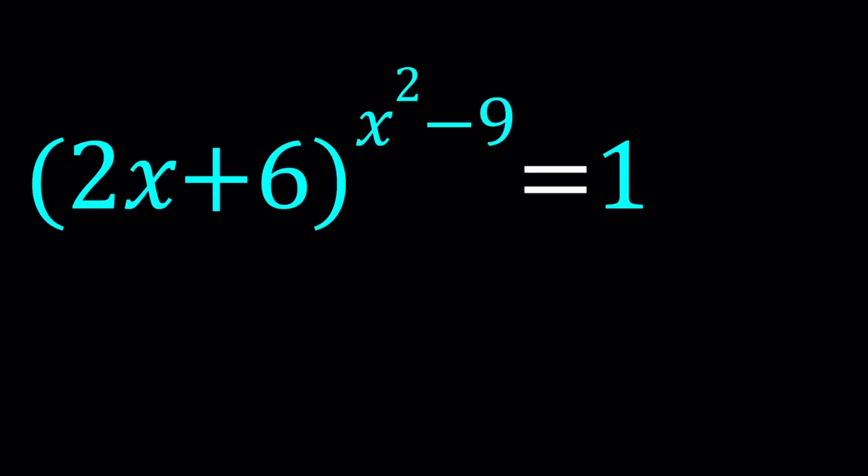Hello everyone. In this video we're going to be solving an exponential equation. We have 2x plus 6 at the base and the exponent is x squared minus 9. So we have 2x plus 6 to the power x squared minus 9 equals 1. And we're going to be solving for x values. I'm also going to show you a graph at the end which has some interesting implications.